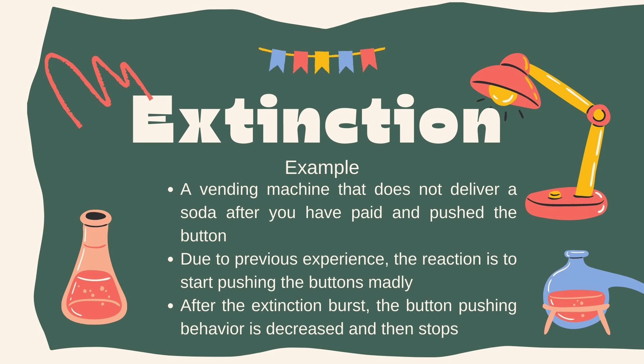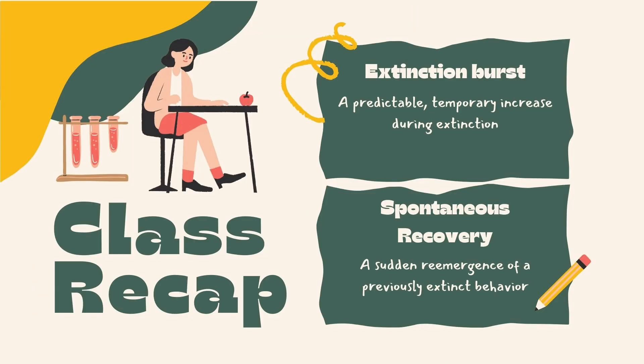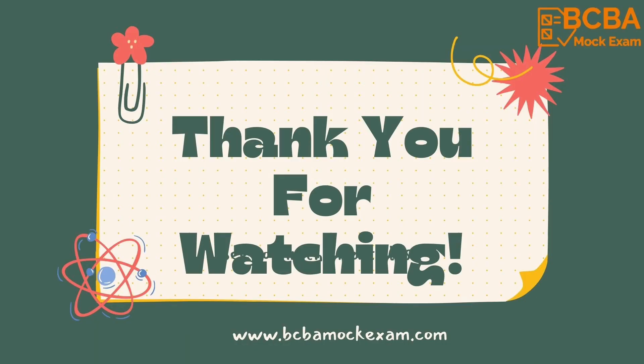In summary, operant extinction is a behavior modification technique that involves removing reinforcement for a previously reinforced behavior in order to weaken or extinguish it. It can be used to eliminate undesirable behaviors in both humans and animals, but it is important to be consistent and aware of the potential for an extinction burst.